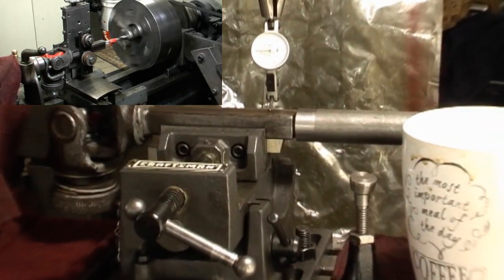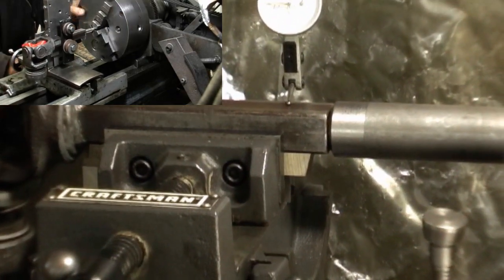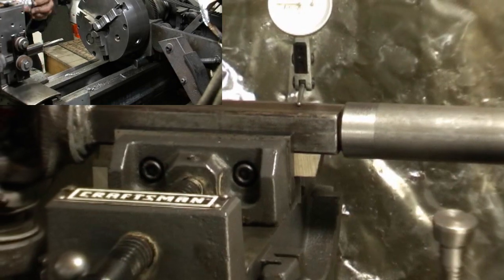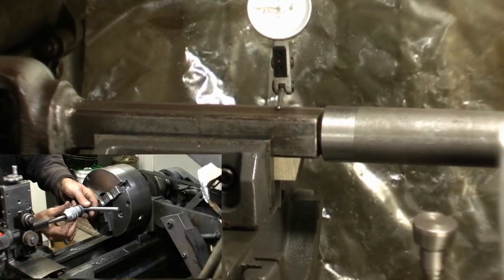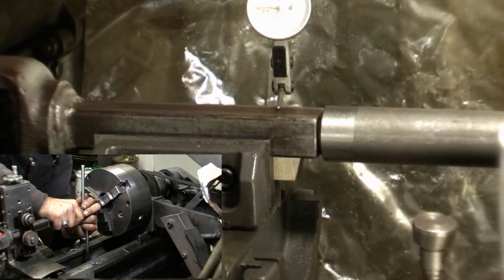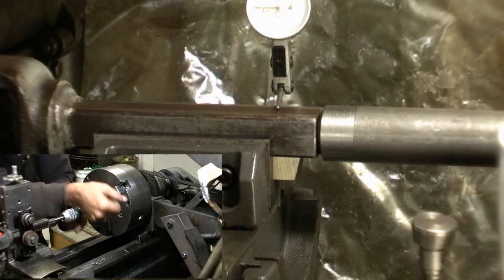And actually get something supporting the, what do you call it, square shafting there, rectangle shafting there. It's 625 in one direction and 875 in the other direction, excuse me.